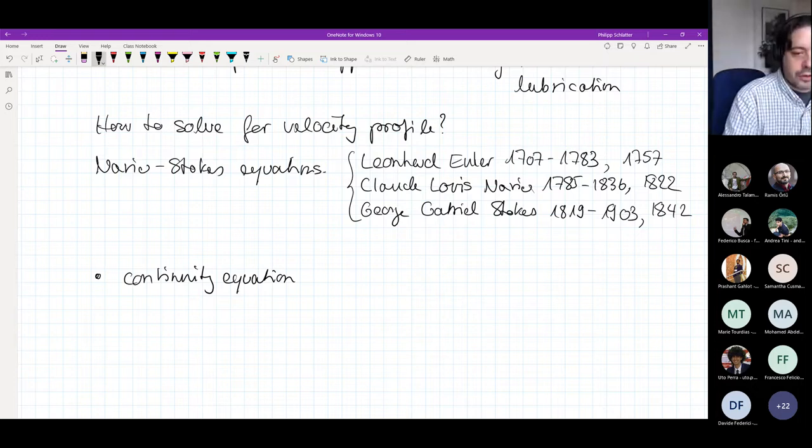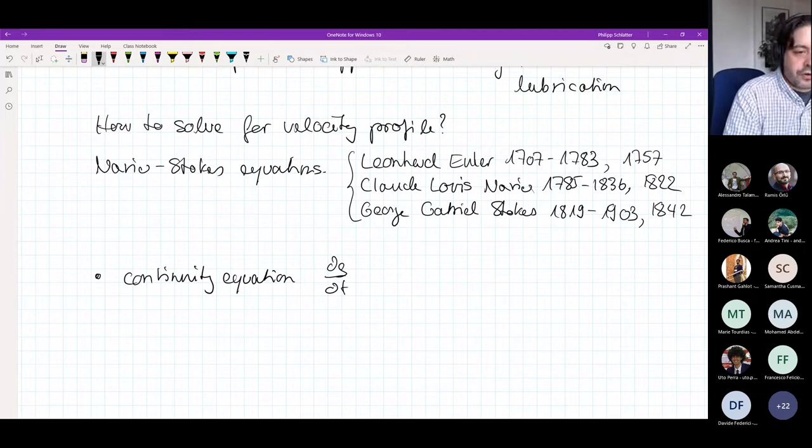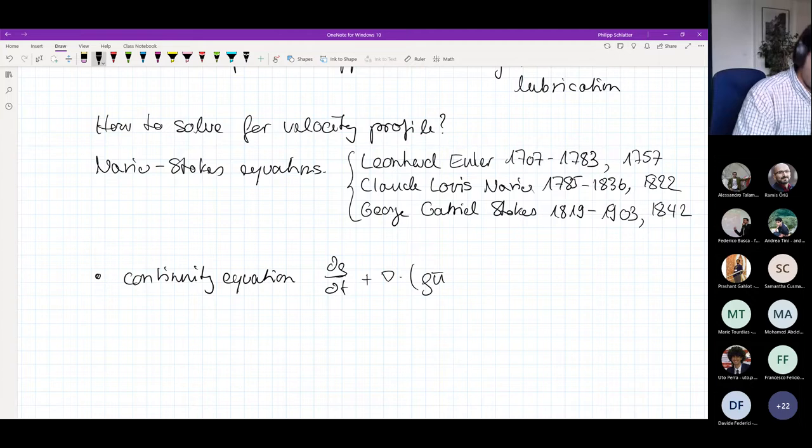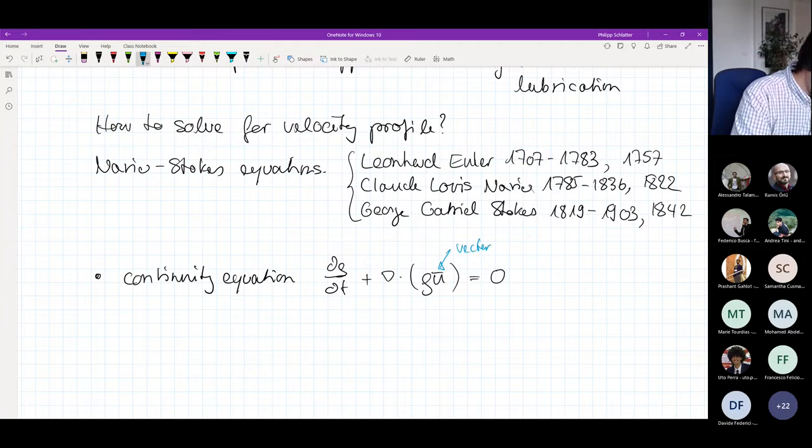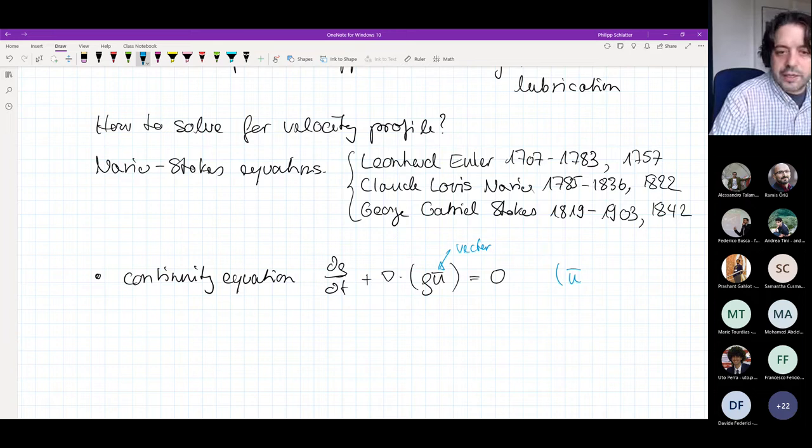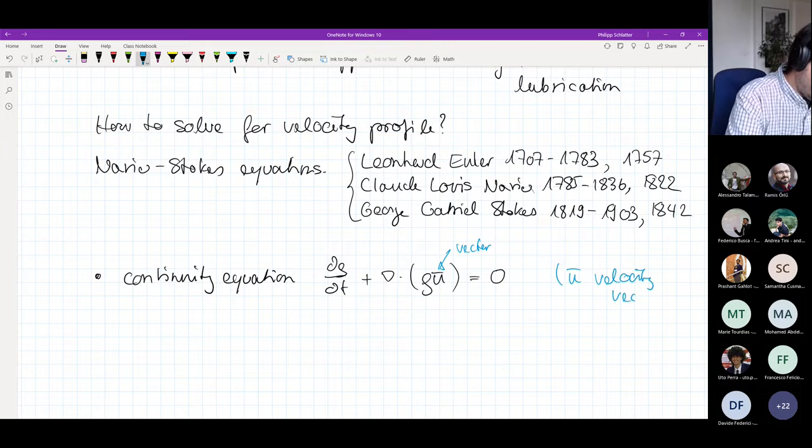It's two different equations. The continuity equation on the one hand. The continuity equation is the time derivative of rho, rho being the density, plus the divergence or the Nabla operator applied on rho times u, which is zero. I want to mention my notation. This one here would be a vector. I typically write an overbar to indicate that this is a vector. So u here would be the velocity vector.